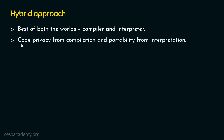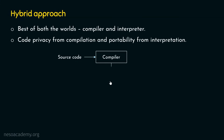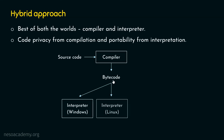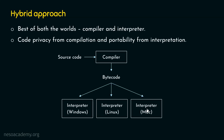The hybrid approach provides code privacy from compilation and portability from interpretation. To understand this, consider the following diagram. The source code is provided to the compiler. In the hybrid approach, what we get from the compiler is not an executable — we get bytecode, which is also known as intermediate code. We can provide this intermediate code to any machine which has an interpreter installed on it. The interpreter is capable of running that bytecode and generating machine code on the fly.